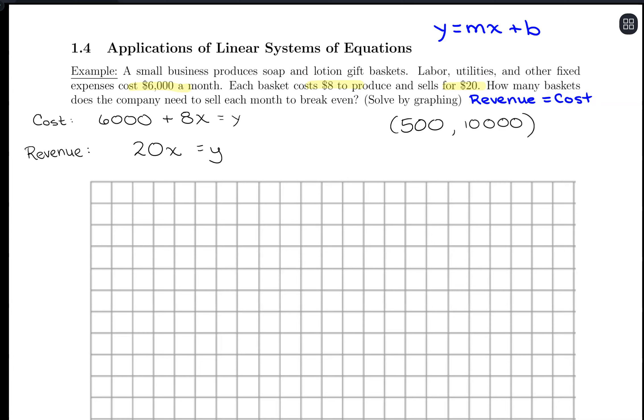So what this tells me is that to break even, so x is the number of baskets, and then that 10,000 is going to be the cost and revenue. Again, they need to be the same for this idea of break even. So we would be having a cost of $10,000, but also making a revenue of $10,000. So we would need to sell 500 baskets each month to break even.